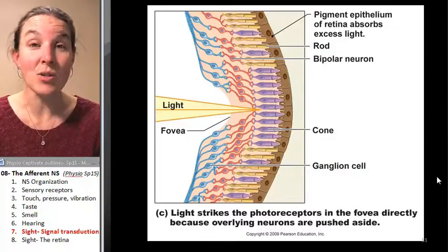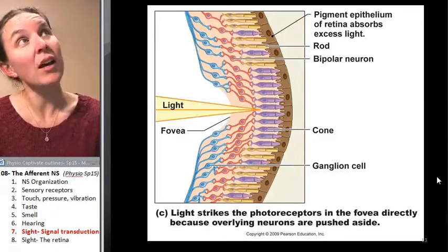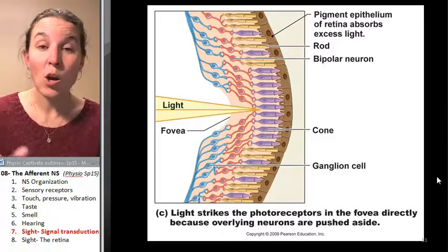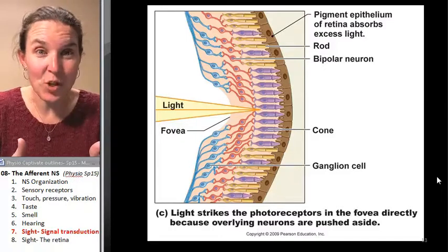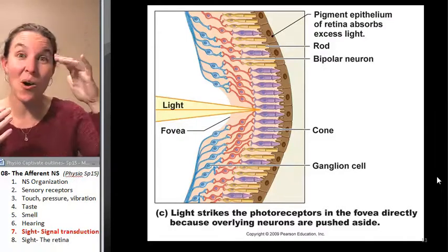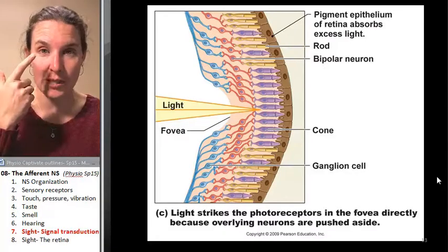Cones let you see in color, c-c-cone, c-c-color. Cones need more light, brighter light to function. You can play with that to see how dim can you dim the lights and still really actually perceive different colors.